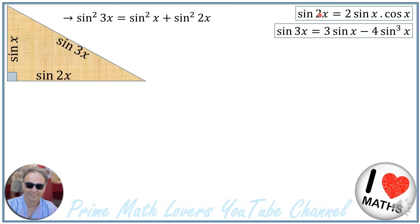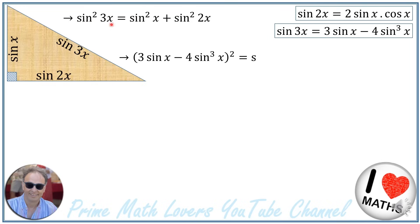Now we have calculated sine of 2x and sine of 3x. We replace them in our main equation. Sine squared of 3x becomes (3 sine of x minus 4 sine cubed of x) squared, and the right-hand side becomes (2 sine of x times cosine of x) squared plus sine squared of x.